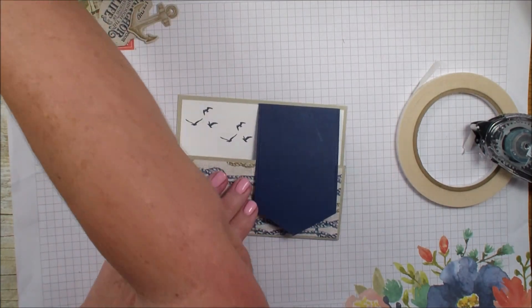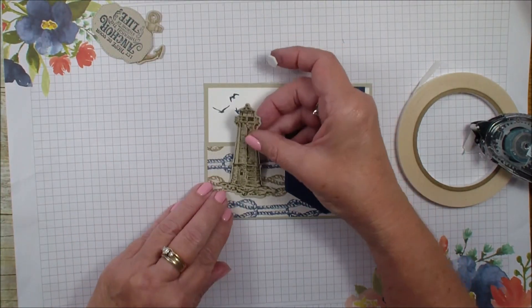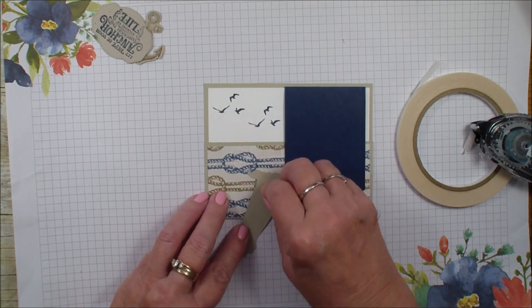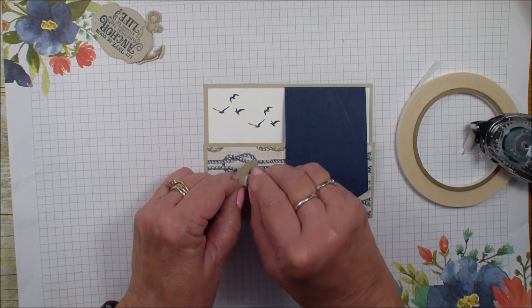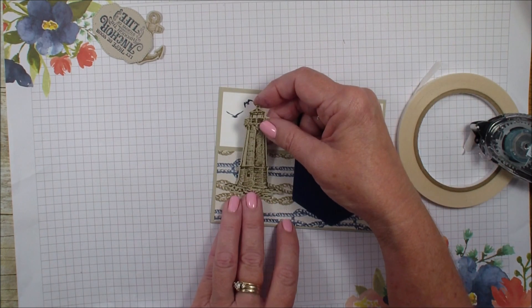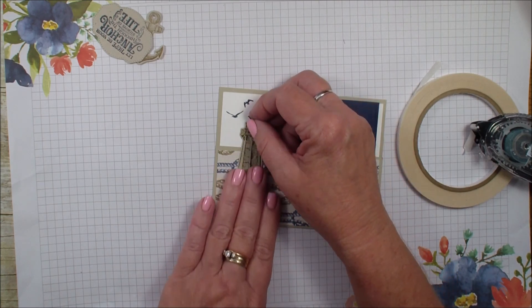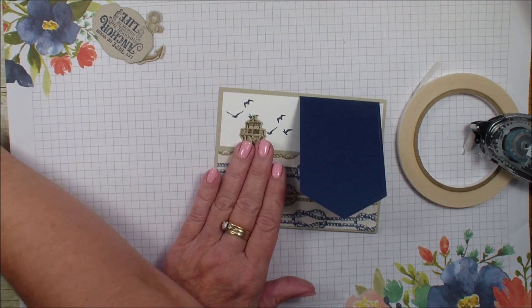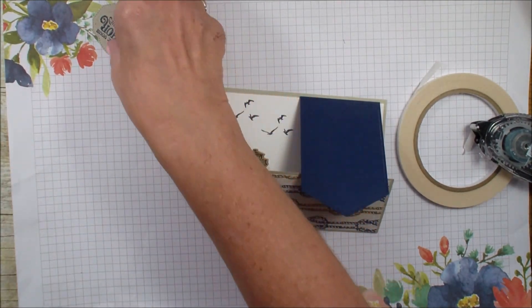I'm going to grab some dimensionals. I'm going to take my lighthouse and put it over on this side making sure I only put the dimensional towards the bottom of that lighthouse. Let's see where I want that. I think I want that about there.